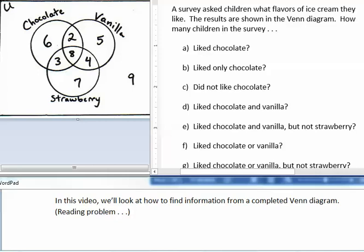In this video, we'll look at how to find information from a completed Venn diagram. A survey asked children what flavors of ice cream they like. The results are shown in the Venn diagram. How many children in the survey?